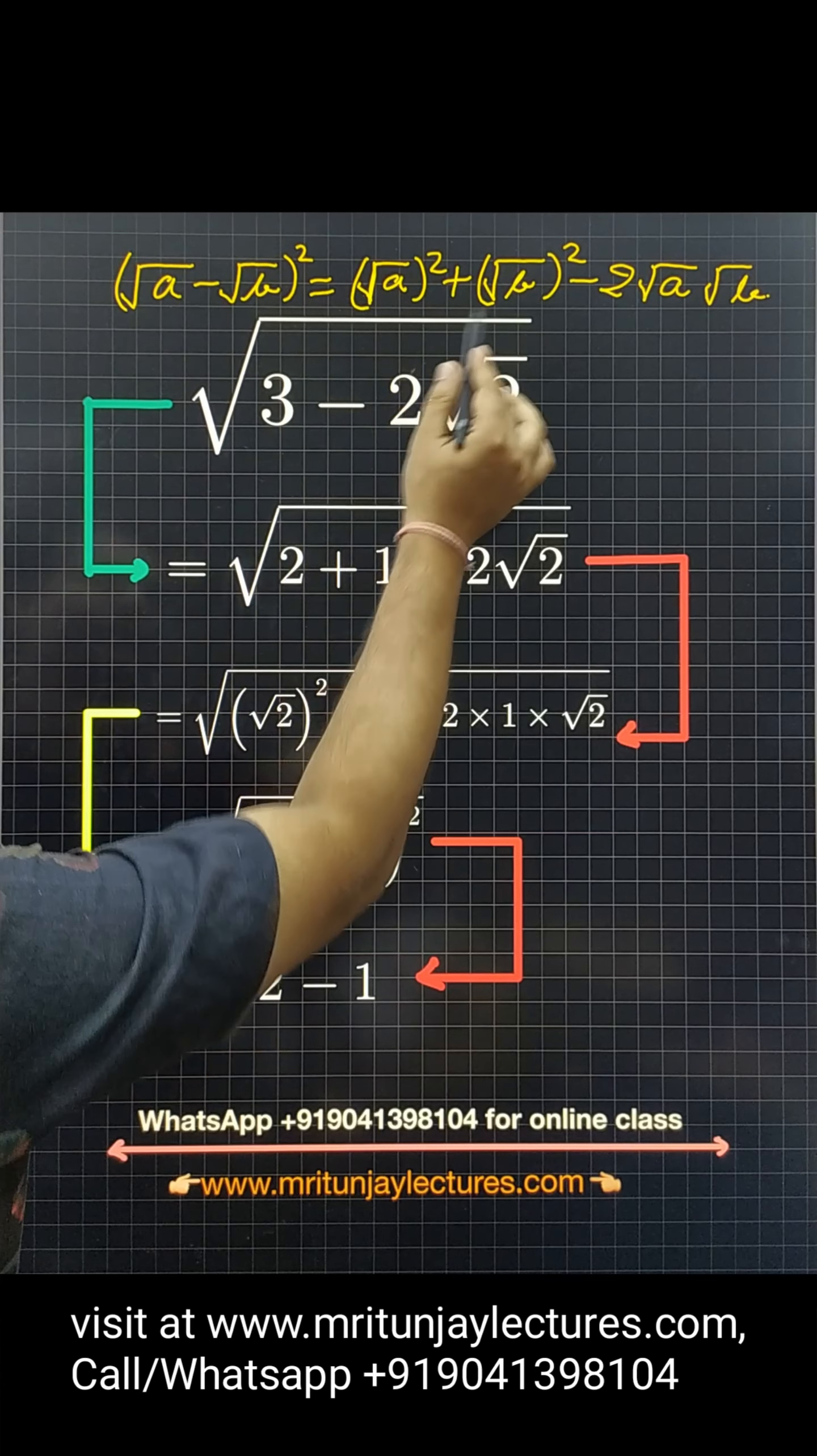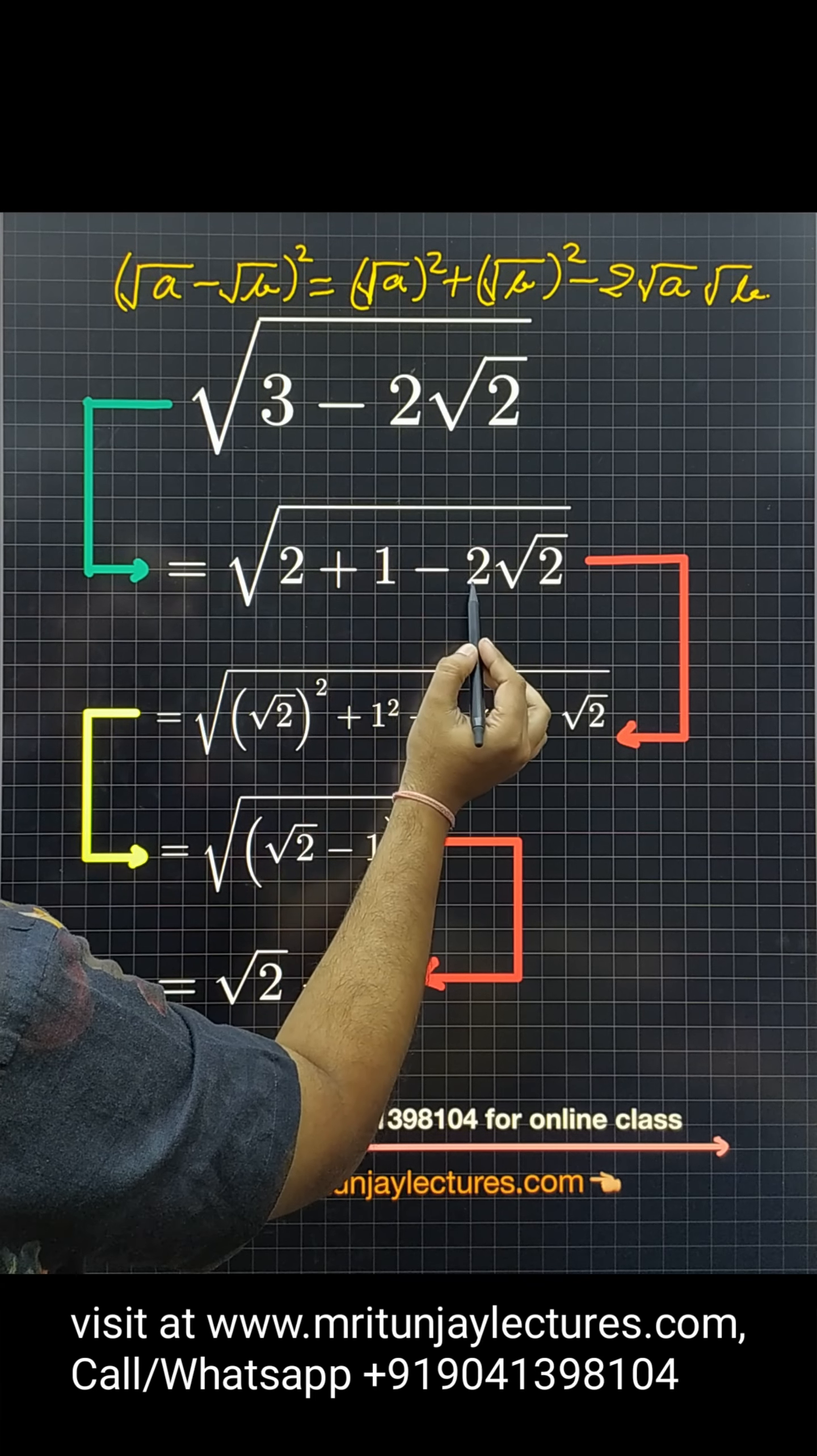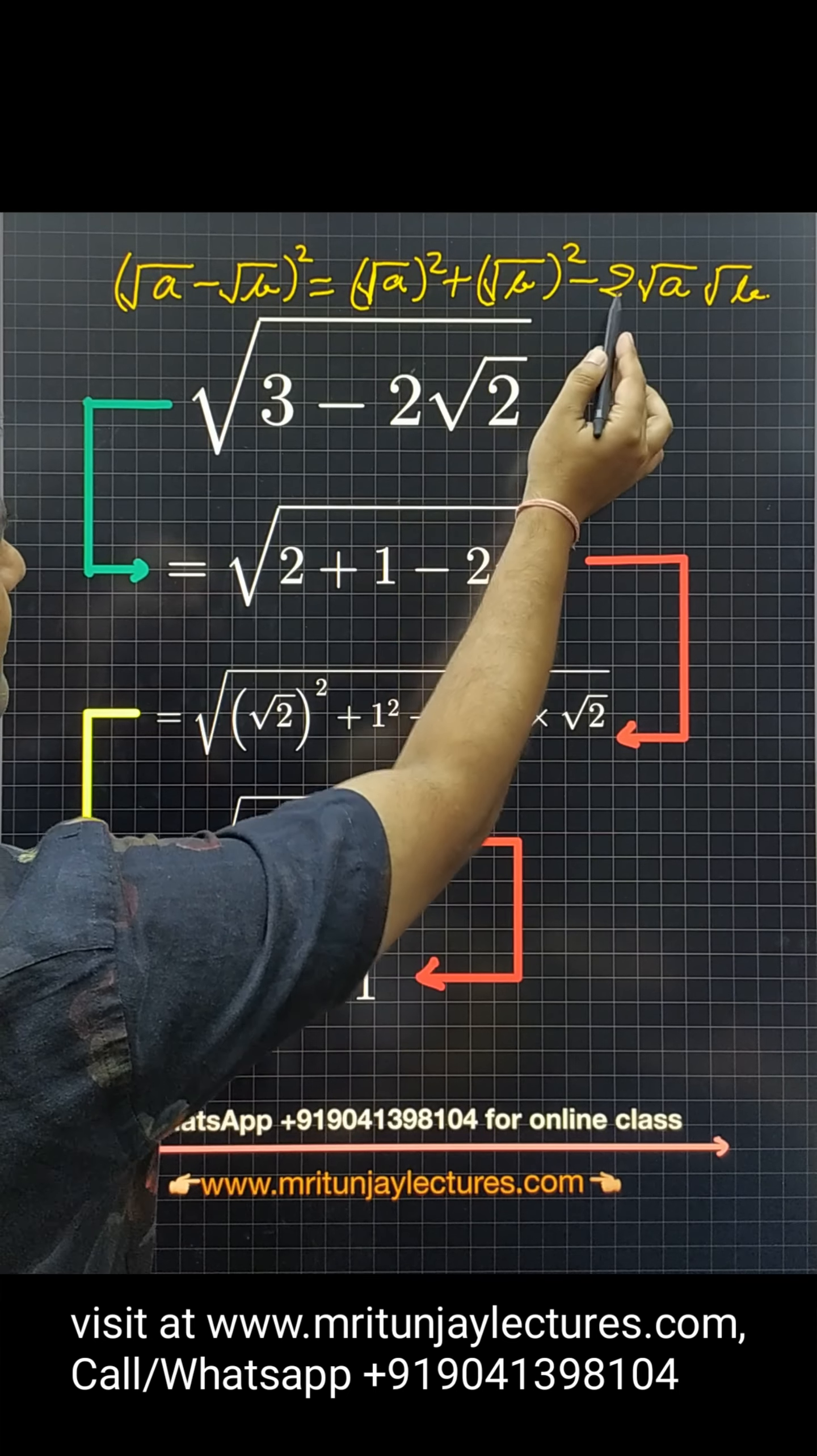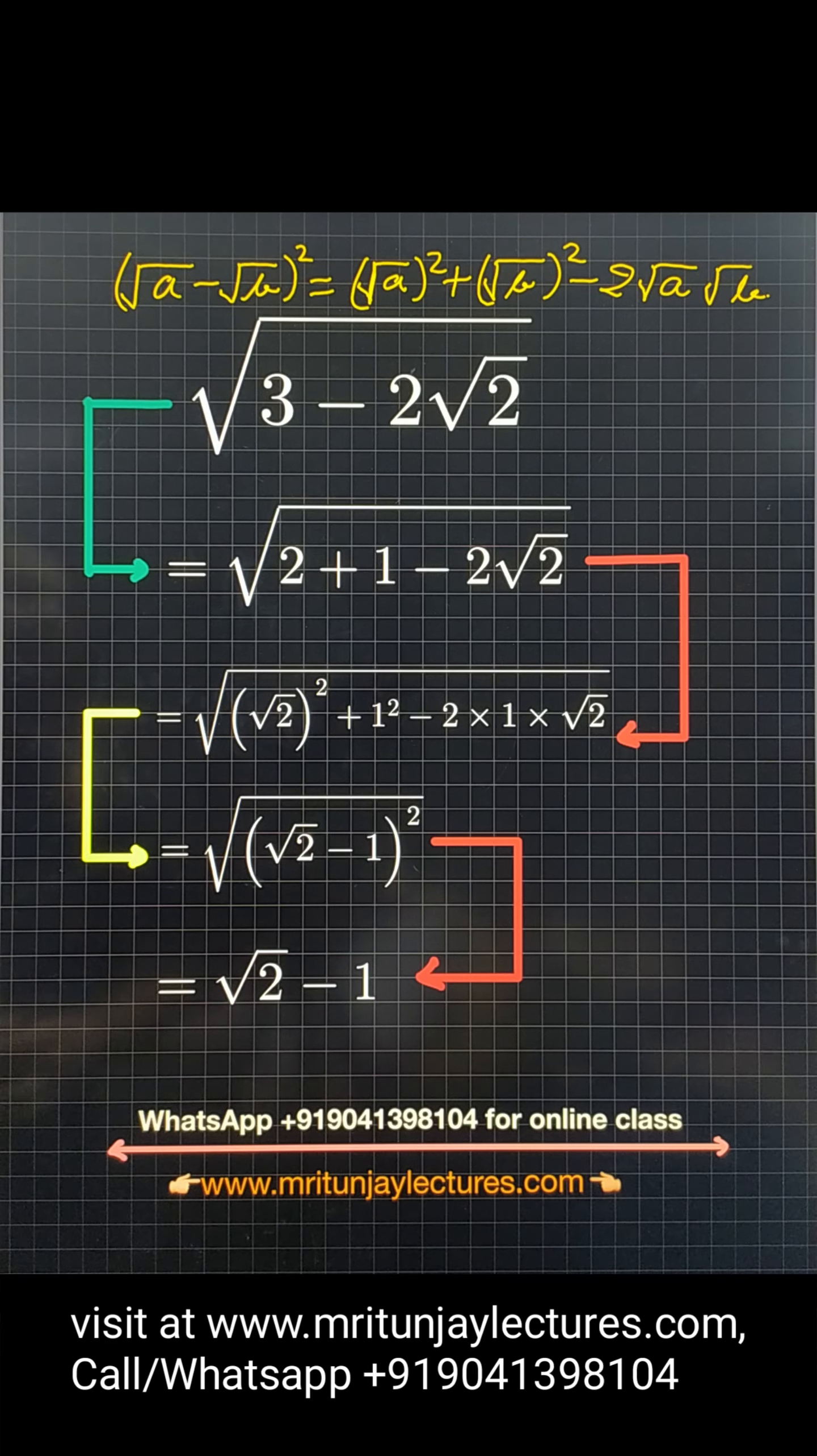So, 3 is also written as 2 plus 1. So, written 2 plus 1 and this one written 2 into basically if you compare 2 into 1 into √2.